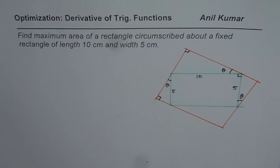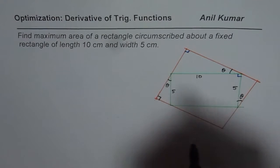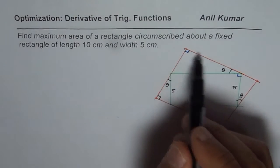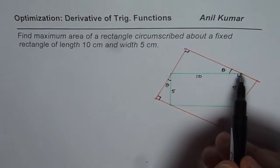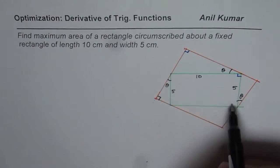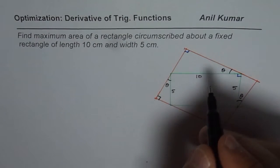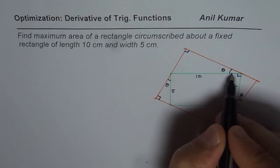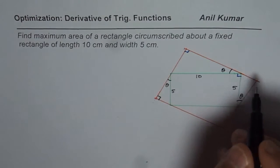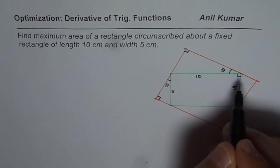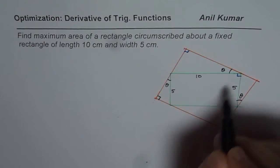So how do you find this? What we need to do is somehow relate the length and width of this bigger rectangle in terms of the given information. What I've done here is let this angle be theta, which the bigger rectangle makes with the edges of the inscribed rectangle.